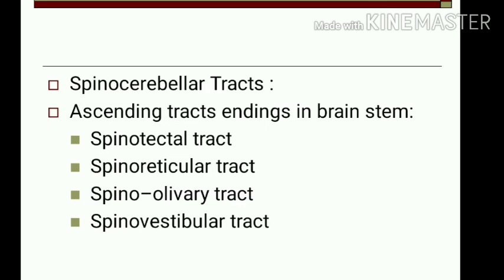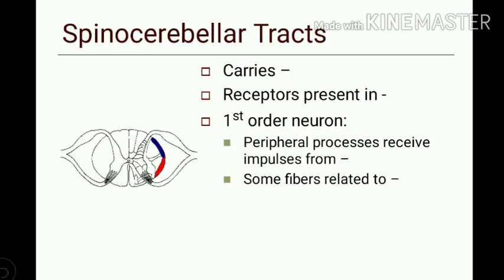The spinocerebellar tract carries subconscious proprioceptive signals. It also carries some exteroceptive sensations like touch, and the receptors are present in the muscles and joints. First order neurons for this tract enter the spinal cord through the dorsal root ganglion. Peripheral processes of this neuron receive impulses from muscle spindle, Golgi tendon organ, and other proprioceptive receptors.